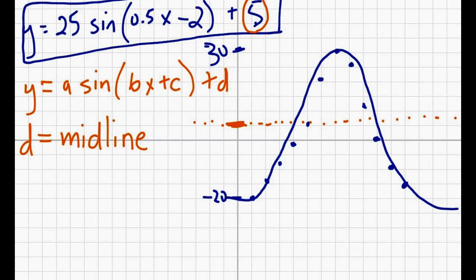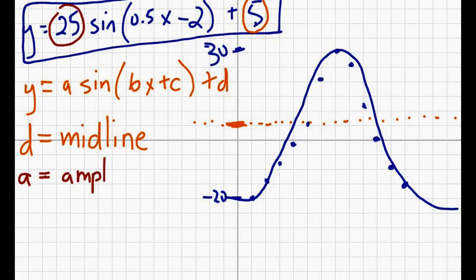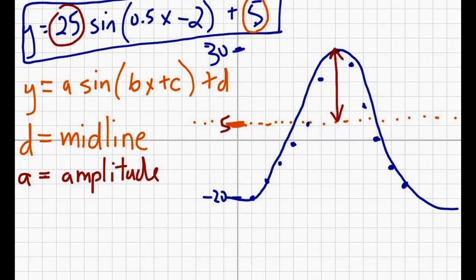That's an easy one — whatever that last number is, that's going to be the middle of the graph. The next one is the a number, which in this case is 25. A is easy to remember because it starts with A — it is the amplitude. So the distance from our midline to our peak: from plus 5 to plus 30 we get an amplitude of 25.